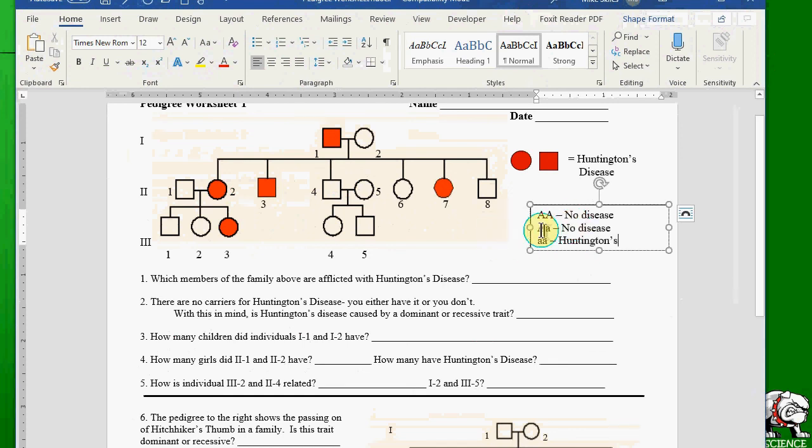But one thing we can say here about capital A, lowercase a, is that this individual is a carrier. They could pass that lowercase a on to other individuals, other offspring. So even though they don't have the particular disease, they're a carrier for it. So that's how this operates if it were a recessive trait.